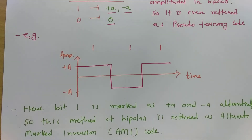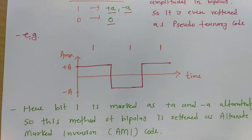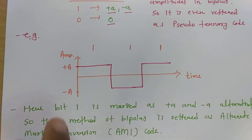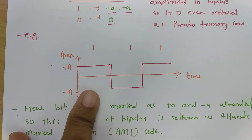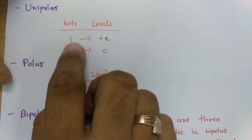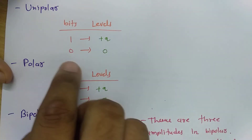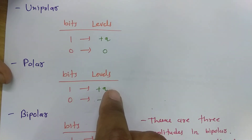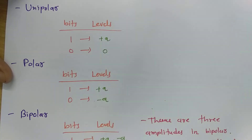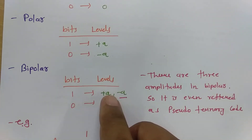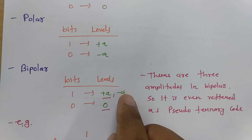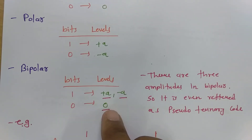These are the basic pulse shaping techniques used in digital communication, and in future sessions I will explain the methods associated with each one. To summarize: in unipolar, bit 1 is plus A and bit 0 is 0V; in polar, bit 1 is plus A and bit 0 is minus A; in bipolar, bit 1 is plus A or minus A, and bit 0 is 0 voltage.